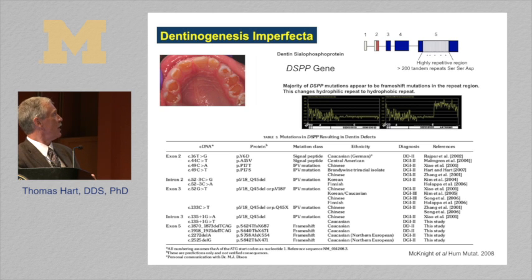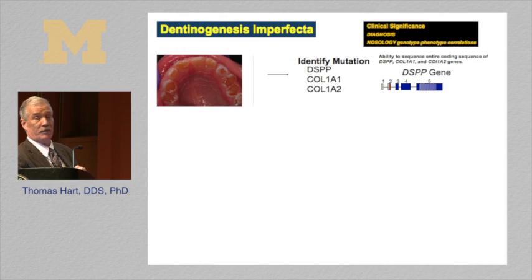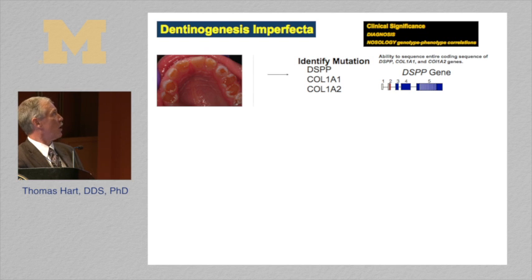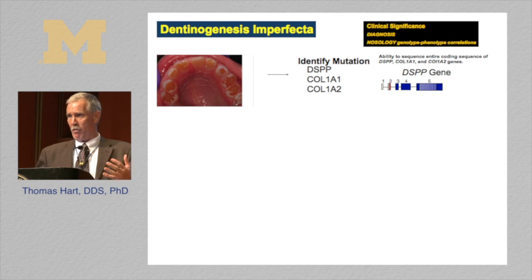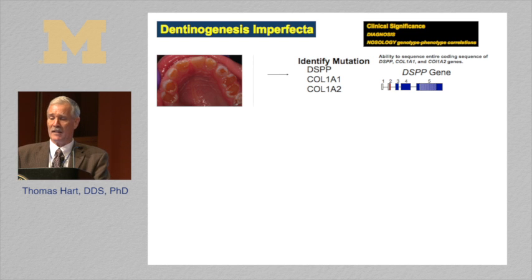This also changed the ability to clinically test for these individuals. Now if an individual presented with DI, you could sequence all three genes and determine the root cause. If they had DSPP mutations, you knew this was probably the only phenotype. If they had mutations of the collagen genes, you may want a more thorough evaluation of that individual and perhaps other affected family members. Clinically, I think that was significant for diagnosis and nosology.